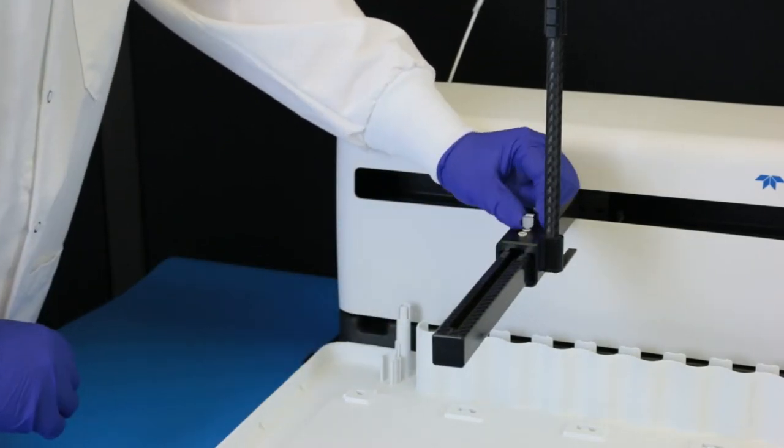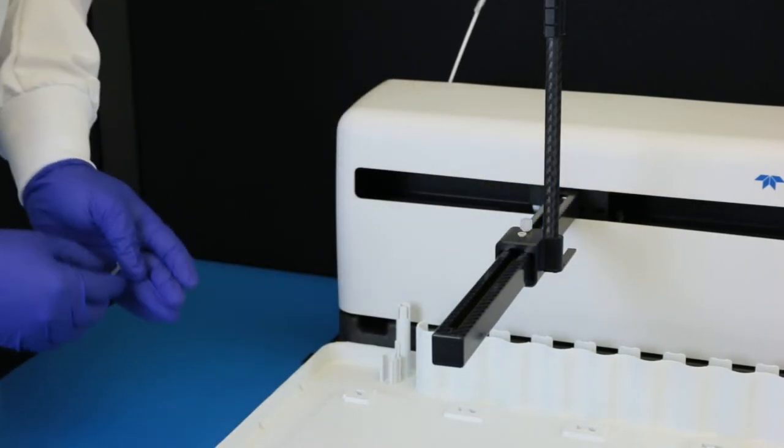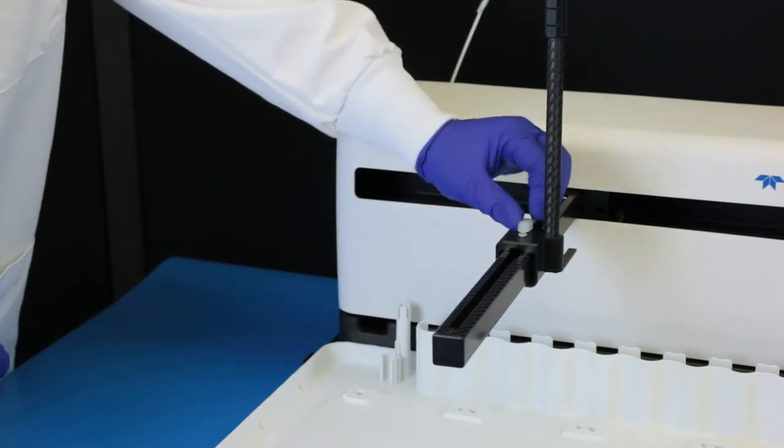Secure the Z drive to the carriage using the two thumbscrews. Tighten the thumbscrews using your fingers.